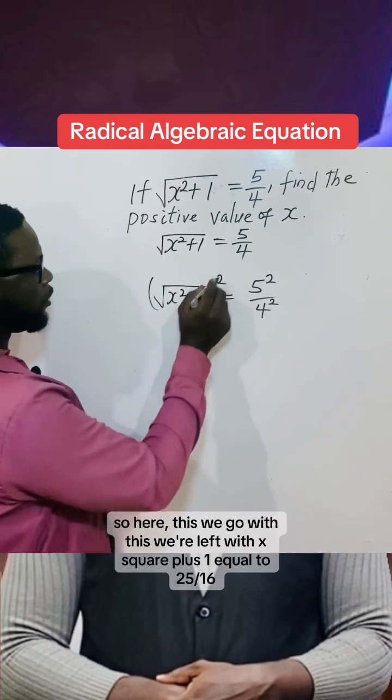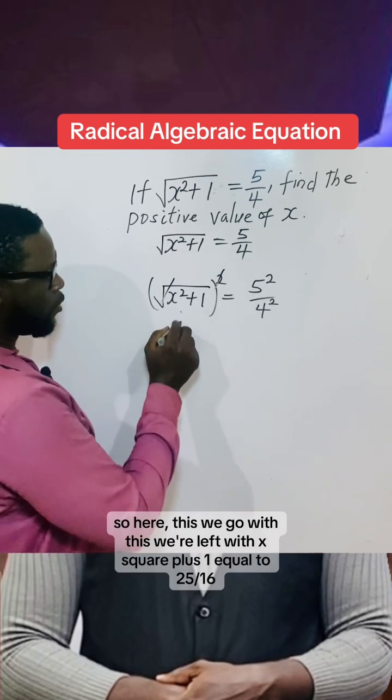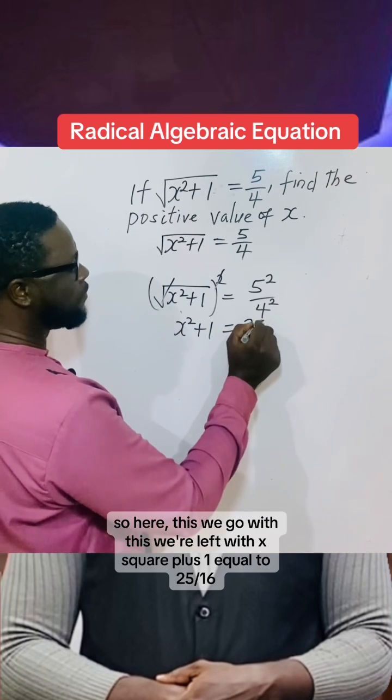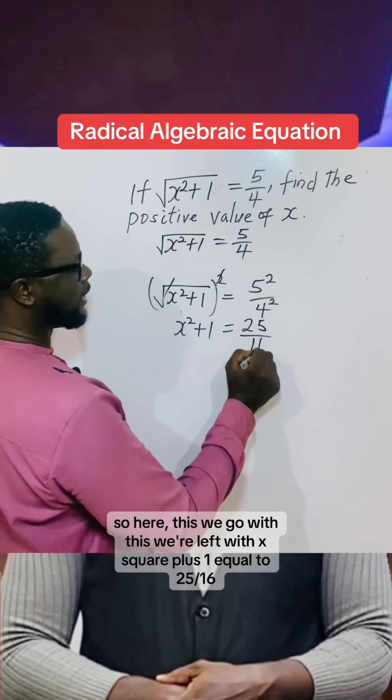So here now, this will go with this. We are left with x² + 1 = 25/16.